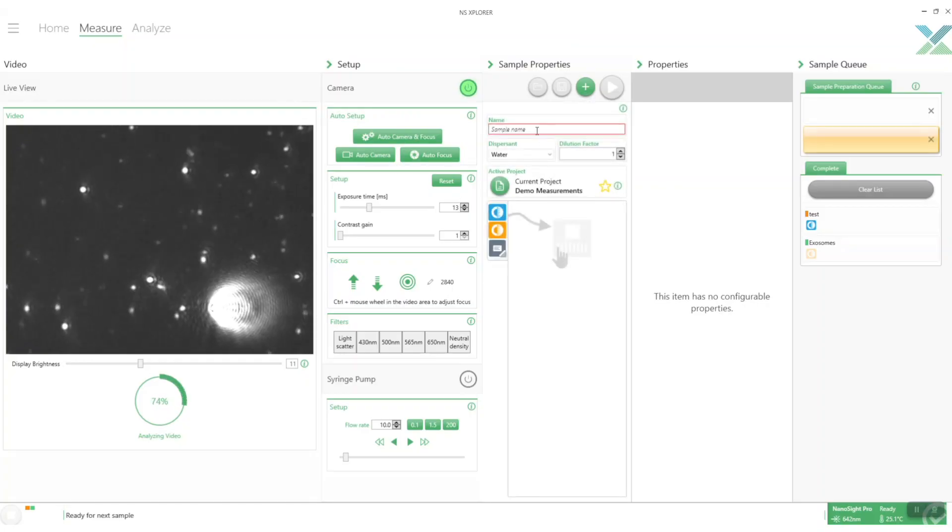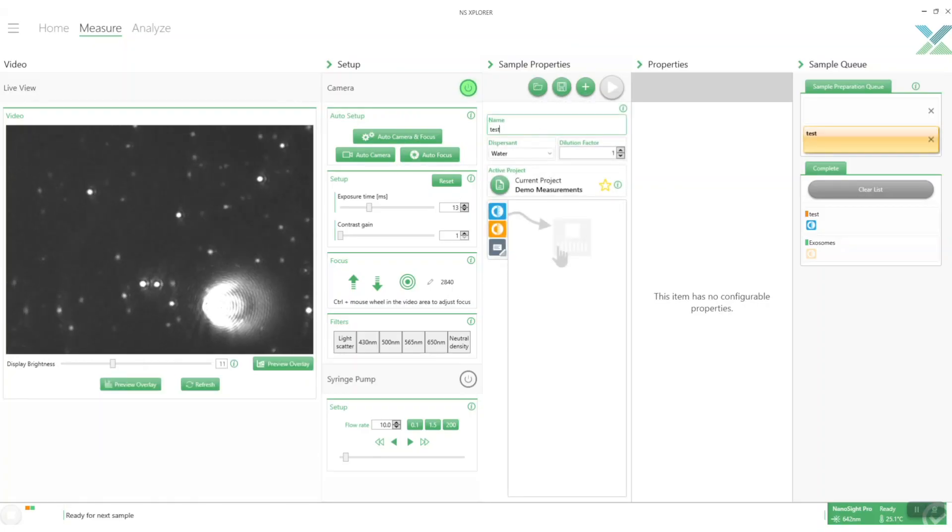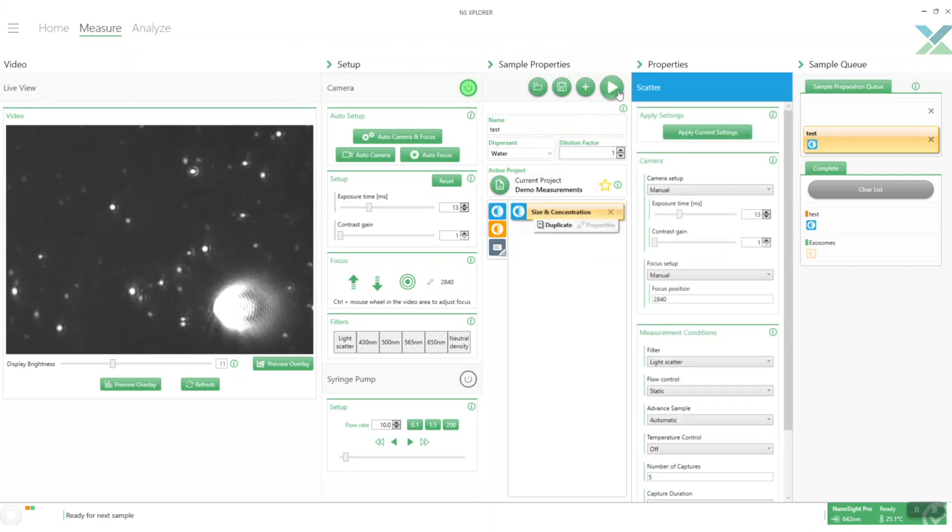Create a new sample and just run a scatter measurement this time so we just apply our current settings and click go.